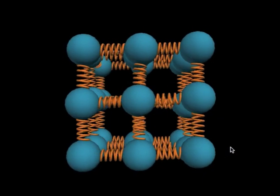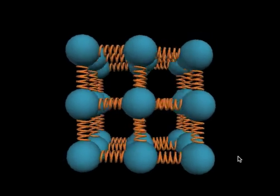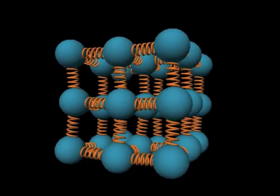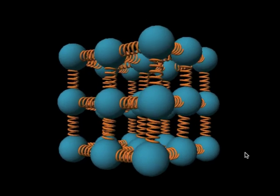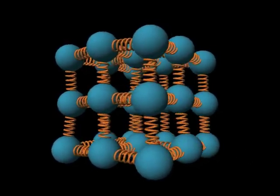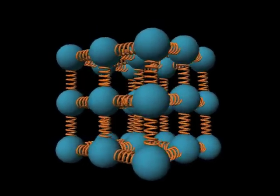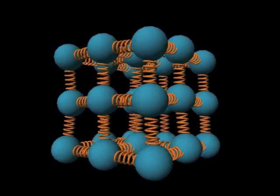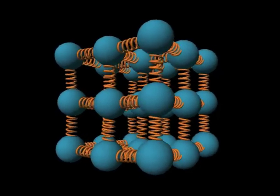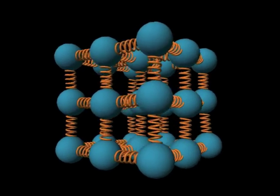Here we have a simulation of a crystal — basically a chunk of matter made up of atoms connected side to side. You can see that everybody's sort of wiggling around. The question is: how can we treat this as a collection of oscillators? One way would be just to focus on one atom at a time.